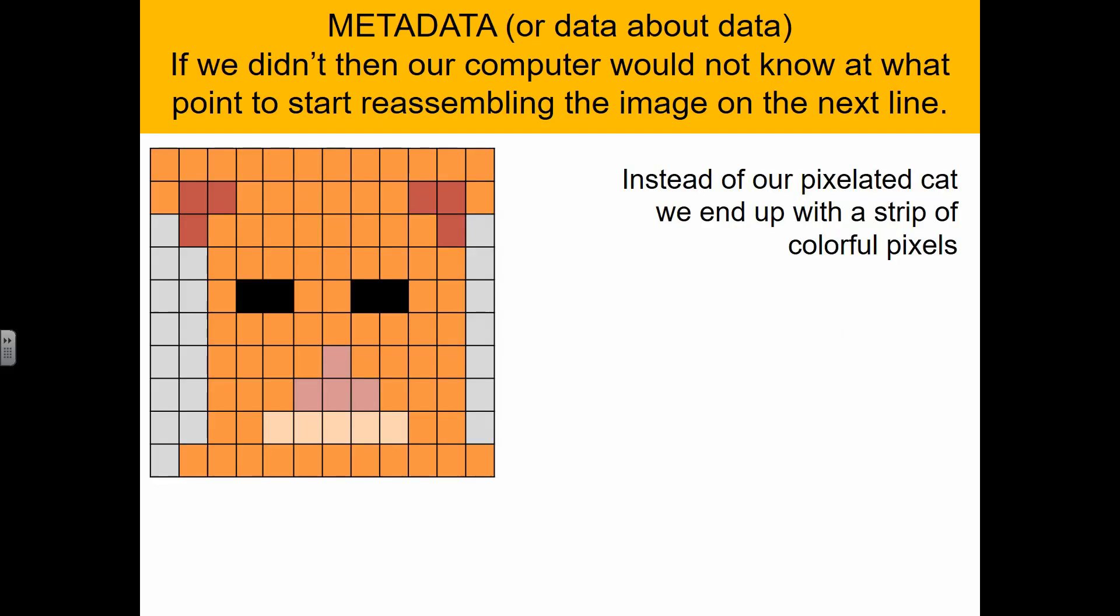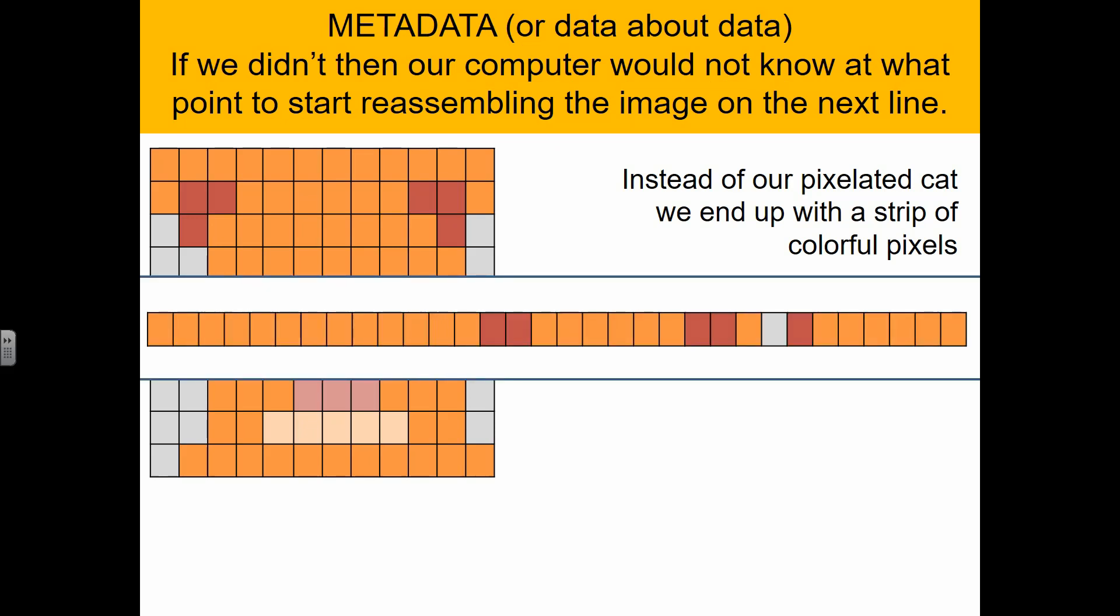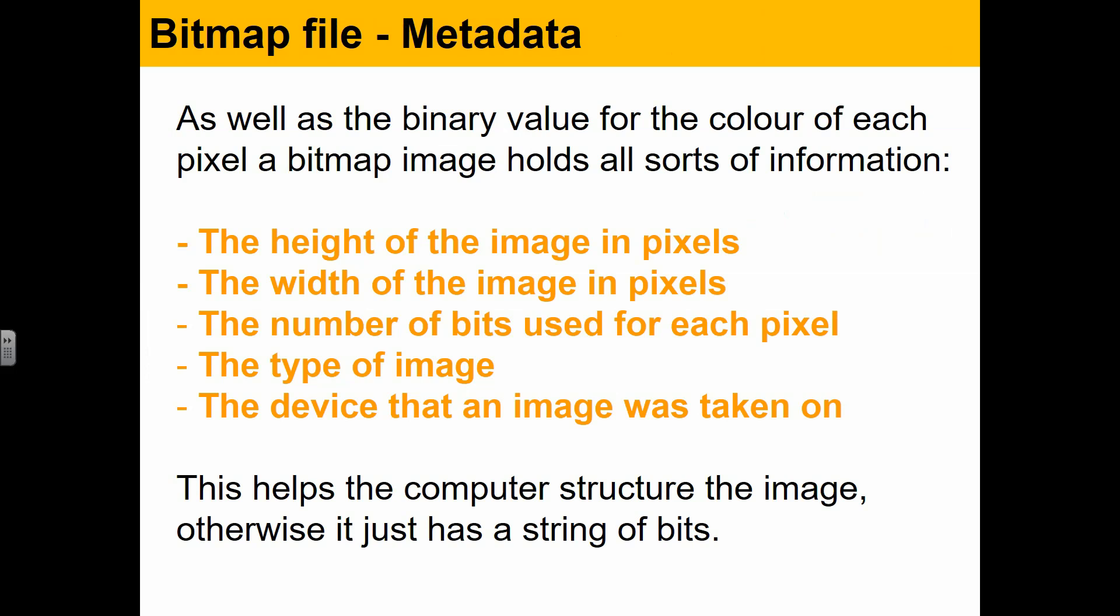There's our crazy cat. If we did not send metadata with it, we just get a line of pixels because it has no idea how big the grid is. If you don't tell it that it's a 14 by 14 pixel image, it will just write them all out as a pixel line. It does not know that after 14 pixels it should start a new line, so this metadata is extremely important. We've got height, width, the number of bits for each pixel, which can determine how many colors we can use, the type of image, the device it was taken on—all those things are different types of information that can be sent as metadata.